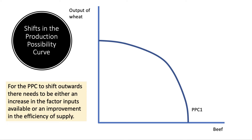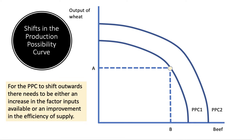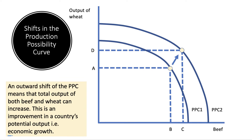To shift the curve out from PPC one to PPC two, we need either an increase in the factor inputs or an increase in efficiency. That shift in the PPC allows total output of both beef and wheat to increase, and that's essentially economic growth — an increase in the country's potential output.